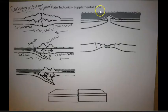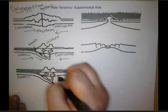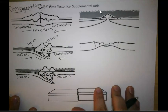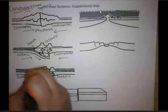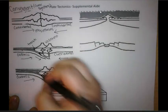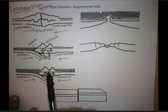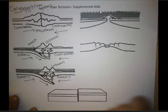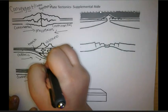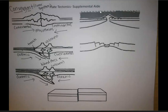Our last convergent boundary example is oceanic-oceanic. We also have subduction when it's oceanic to oceanic crust — the older, denser crust will dive down underneath the younger oceanic crust. Again, the oceanic plate dives down, comes into the Earth, melts, and that magma rises. Because this is in the ocean, we get island arcs. We also have subduction happening in the ocean, and we get a trench — these trenches are even deeper because it's two oceanic crusts.